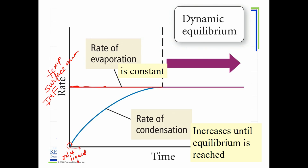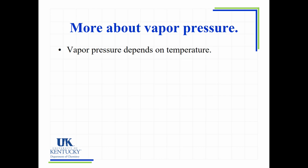At the beginning there is zero condensation, shown in blue. As time goes by and molecules enter the gas phase, condensation begins to occur and its rate keeps increasing. Eventually the rate of condensation equals the rate of evaporation — we reach dynamic equilibrium — and from that point forward the vapor pressure is constant.